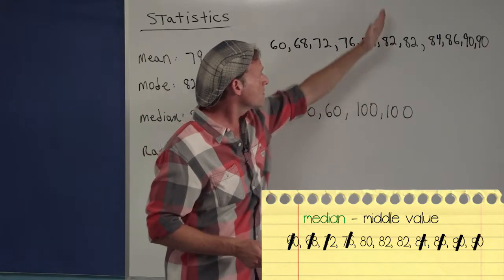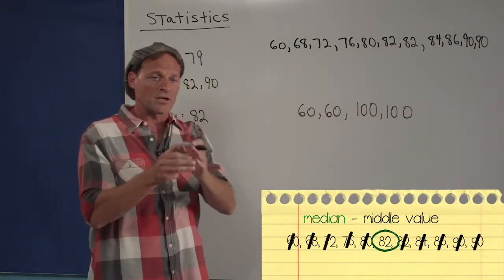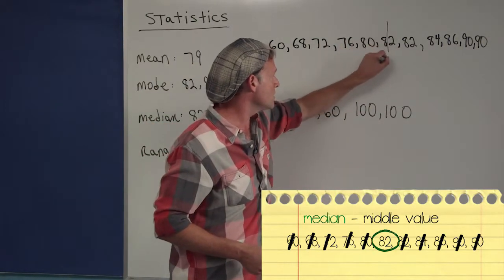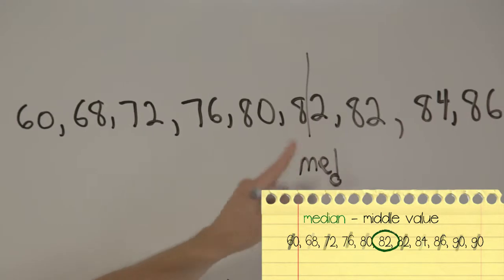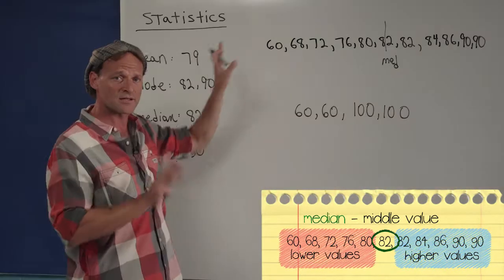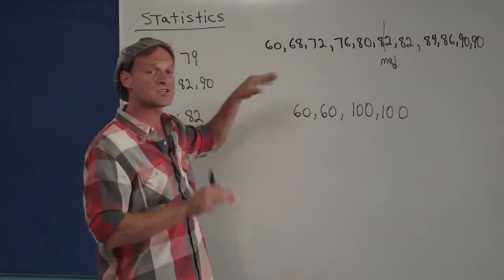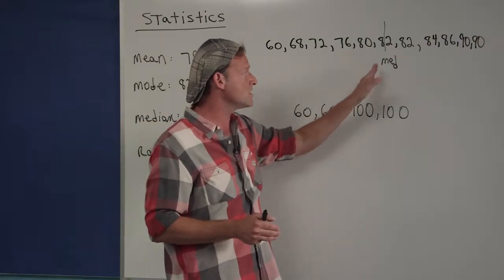Since there are 11 numbers here, the sixth number, 82, would be that dividing line. This number, which is the median, splits the upper half of the class and the lower half of the class. It allows one to look at the top students perhaps separately and the bottom students separately. That's what the median is.